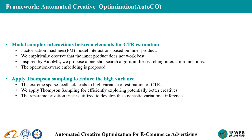FM models interactions between elements of creatives based on the inner product, so that creatives with similar composited elements are similarly represented. Through our empirical study, we find that the inner product does not work best. Inspired by automated machine learning, we propose a one-shot search algorithm for searching effective interaction functions between elements efficiently. The interaction function family to search can be defined by extending the multiple operators in the inner product to an operator set: max, min, plus, multiply, concat over operation, as well as operator-aware embedding, and replacing the sampling operation with a fully connected network.